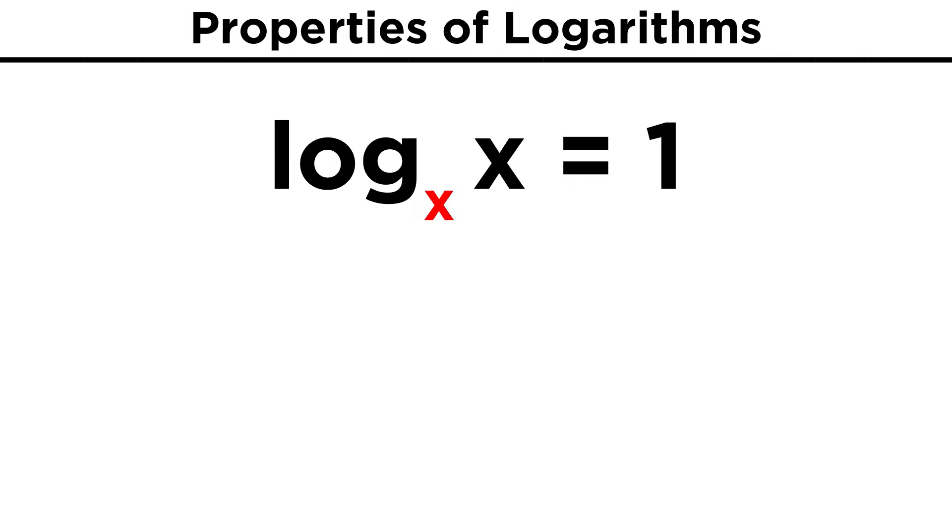First, if the base of the log and the number that the log operates on are the same, this will always be one, because anything to the first power equals itself.